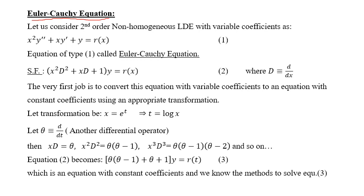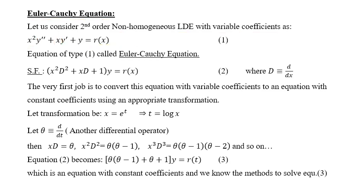For the Euler-Cauchy equation, consider a second order non-homogeneous linear differential equation with variable coefficients — not constant coefficients. Here the coefficient of y'' is x², the coefficient of y' is x, and the coefficient of y is 1. The thumb rule for this to be called an Euler-Cauchy equation is: whatever is the order of the derivative, the same number of x's should be multiplied. So y'' has order 2, so x² appears; y' has order 1, so only x appears; and y has no derivative so there is no x. This kind of equation is called the Euler-Cauchy equation.